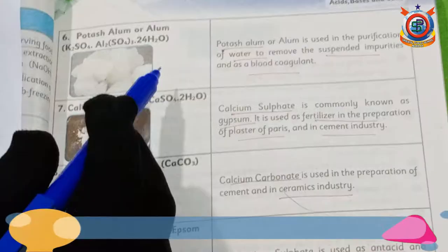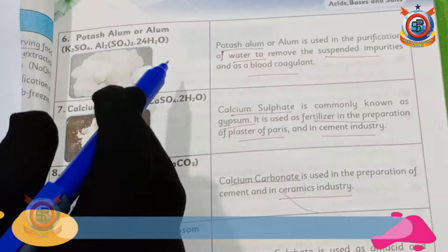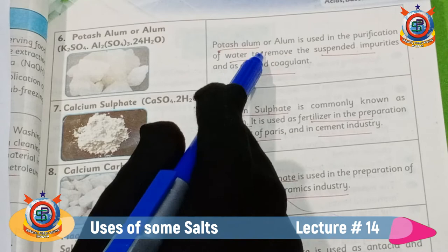Another type of salt is potash alum. Potash alum is used in the purification of water to remove suspended impurities. When added to water, the suspended impurities attach together to form larger particles which can then be removed by filtration.